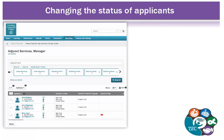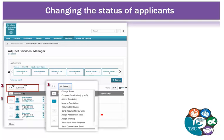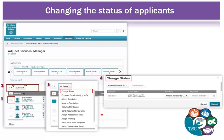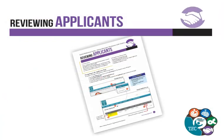Starting on the Applicants page, click the check box of the applicant whose status you want to change. Click on the Actions tab. A drop-down menu will appear. Click Change Status. You will be navigated to the Change Status pop-up. Under New Status, click the option you want. Click Submit. Still have questions? Refer to the Reviewing Applicants Quick Reference Guide.